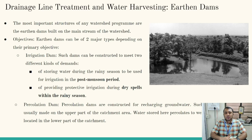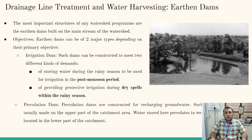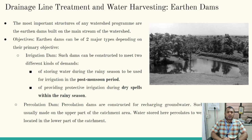The third important objective of earthen dams is the percolation of water, which is why earthen dams are also called percolation tanks in watershed management. A percolation tank is one where water stored on the surface percolates into the soil and recharges the groundwater. So the three objectives are: storing water for non-monsoon use or dry spells, and recharging groundwater through percolation. Understanding these objectives helps us appreciate the importance of earthen dams in watershed management.